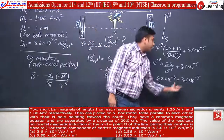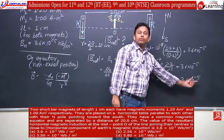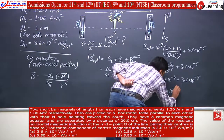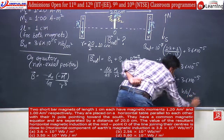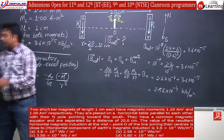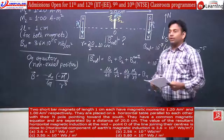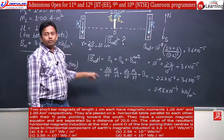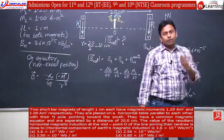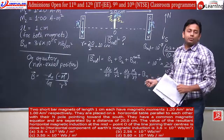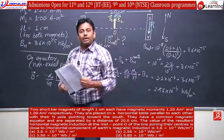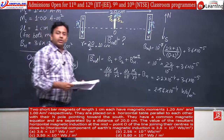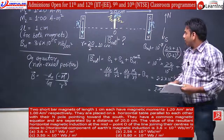To add the two numbers we convert to the same power of 10, bringing everything to 10⁻⁴. This question combines the full unit of magnetism — the chapter relating permanent magnets and Earth's magnetism with the effects of electric current — merging two chapters together. This is a very simple formula-based question; we just need to understand the situation, draw a proper diagram, and do a simple calculation.